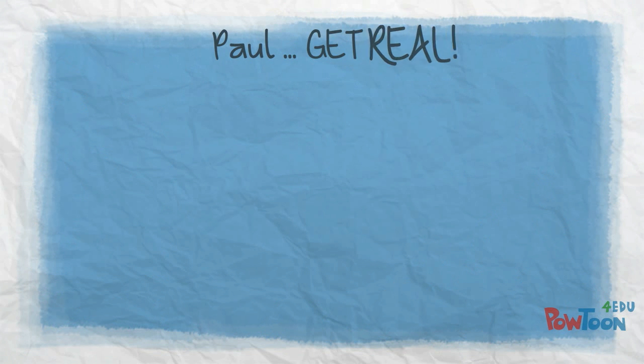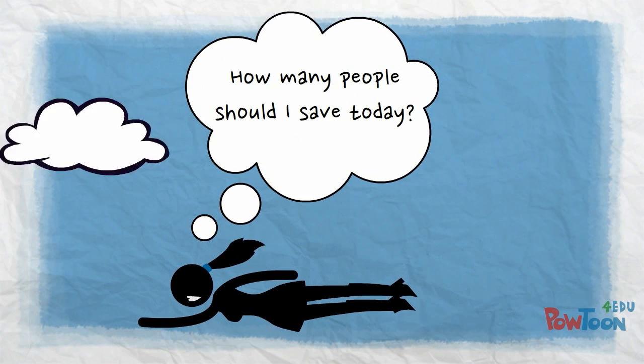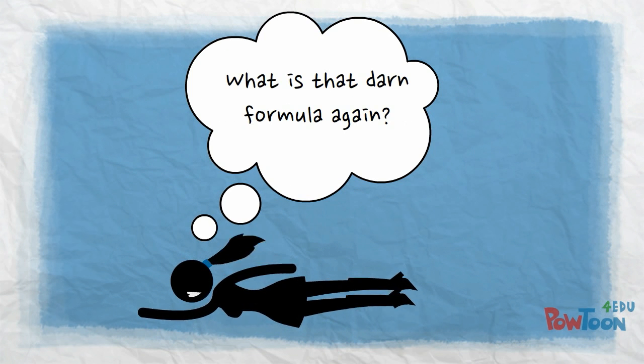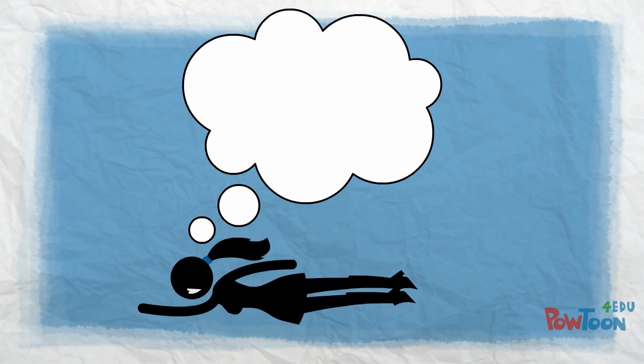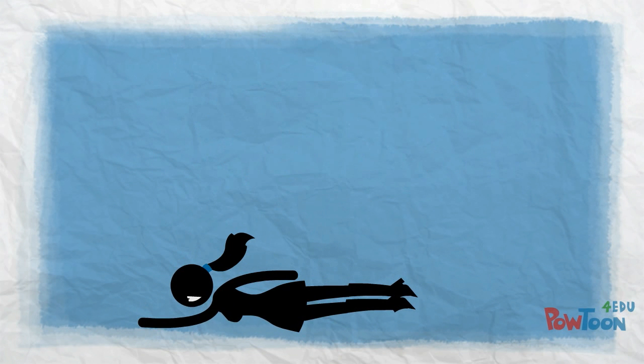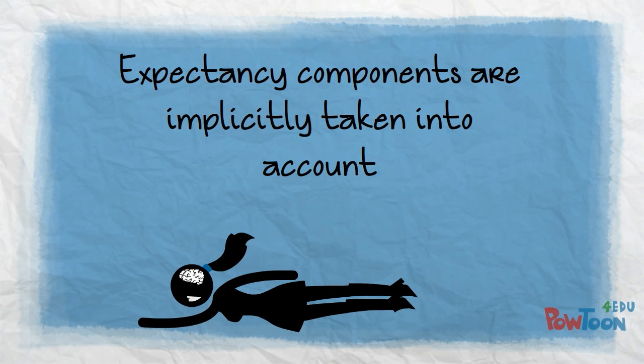You may be thinking: this theory isn't realistic — individuals don't go about their daily lives calculating these formulae. You are partially right. Individuals instead implicitly take into account the expectancy components when determining their course of action — that is, where to direct effort.